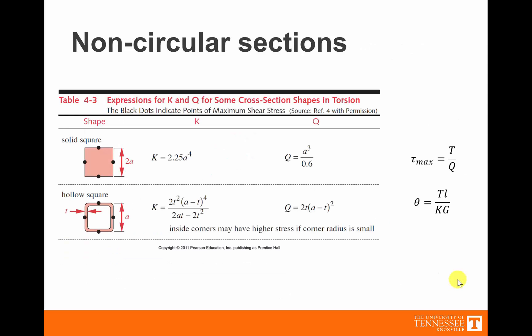What if the cross-section is not circular? It's not as easy to calculate. But equations have been derived showing that the maximum shear still occurs somewhere on the outside, and it's equal to T/Q, where Q is given by a specific formula. These come from Norton's Machine Design book — see Table 4-3 for other cross-sections beyond solid square and hollow square. You don't need to solve the integration yourself; it's already been done. Most of the time we care about the maximum shear, not the full distribution everywhere.